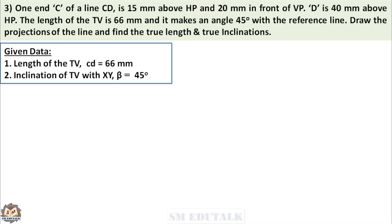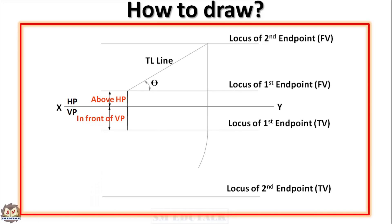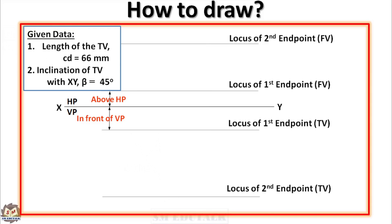We will see how to draw the front view and top view of the line CD. To get the projections, usually a true line should be drawn by connecting the first endpoint locus and second endpoint locus in one view. Then it should be projected to the first endpoint locus of the other view. After projection, it should be rotated to the second endpoint locus in that view. In this example, you are getting a top view. To draw this, you should know the true length and its inclination. But in the problem, top view length and its inclination are given. So we can apply the drawing procedure in a reversed manner.